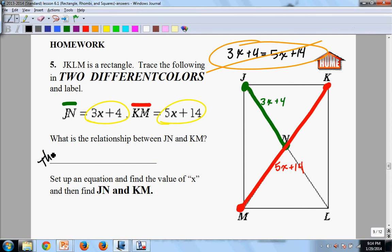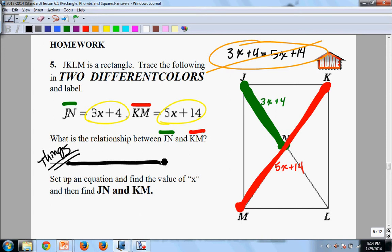Instead, you ask yourself about things. Things first. What is the relationship between the actual segments themselves? So I'd like you to trace JN again. Physically trace it. Get your pencil on your paper and trace it. Physically trace it. Now trace KM. Physically trace it, please. Ask yourself, what is the relationship between those two segments? Don't worry about the algebra. Write out that relationship.